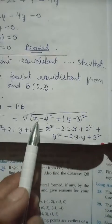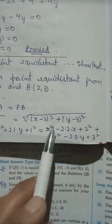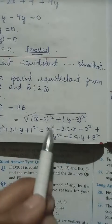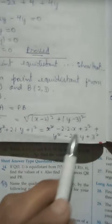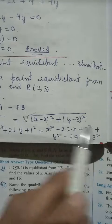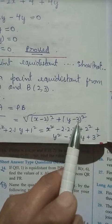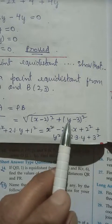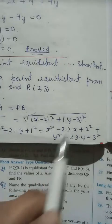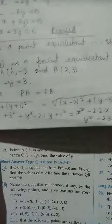On the right side, for x minus 2, again one alphabet and one number, we apply (a - b)² formula with a = x, b = 2, giving x squared minus 2ab plus b squared. For y minus 3, we apply the same (a - b)² formula, giving y squared minus 2ab plus b squared.